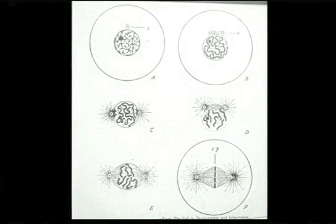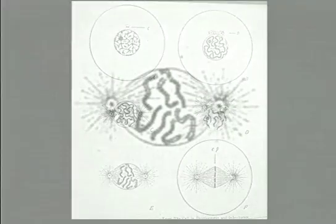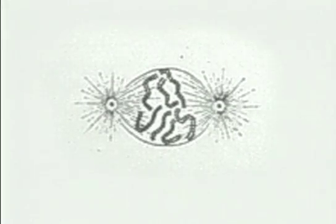Then the two centrioles pull apart the DNA strands as they duplicate themselves in preparation for cell division.